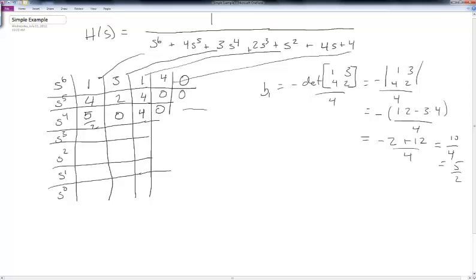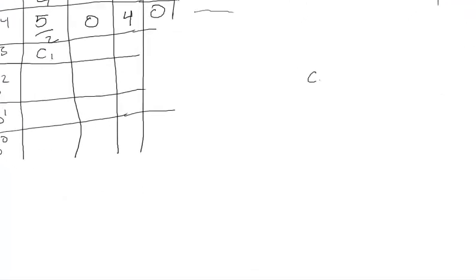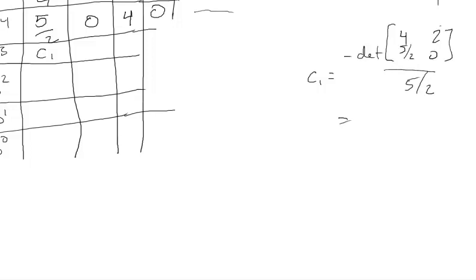For the s^3 row, C1 = −det([4, 5/2; 2, 0]) / (5/2). The zero simplifies the calculation and we end up with C1 = 2.